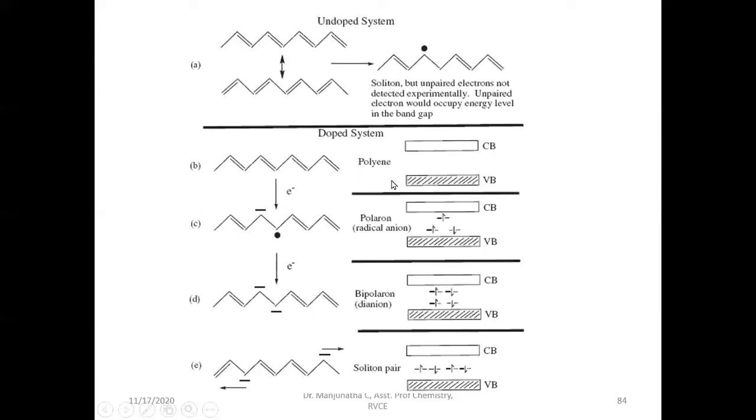This is the system of polyacetylene. Conduction band and valence band are filled and this is empty. When you add one electron to this, this is a reduction by adding electron, using a donor. By using a donor, you can create the negative charge here. When you add an electron, one electron free radical is going to form.